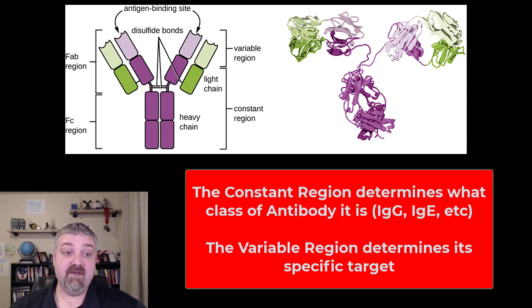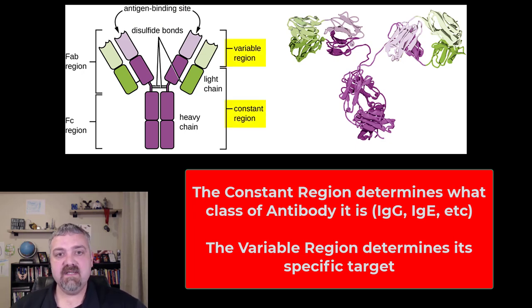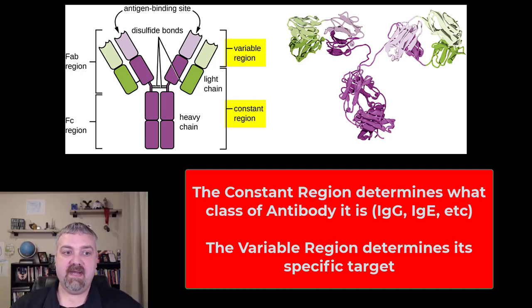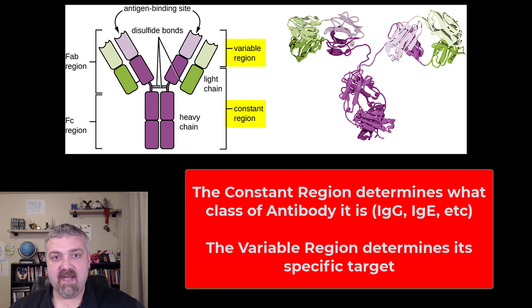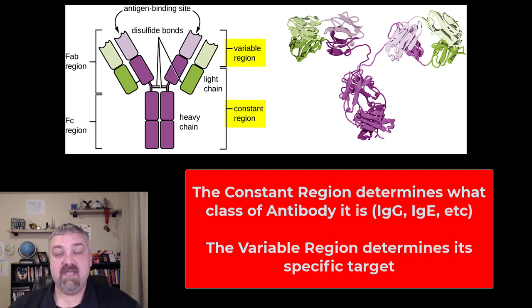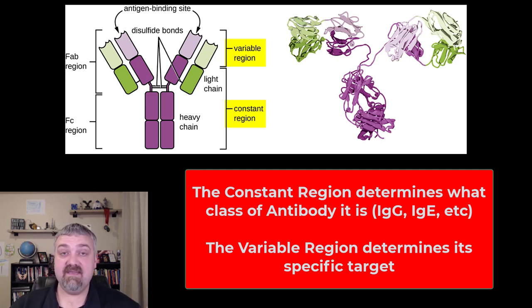Specifically what we're looking at here, you'll notice on the right hand side, at least in the middle, you have the constant region and the variable region. The constant region of an antibody determines what class of antibody it is — is it an IgG, an IgA, an IgM, an IgE, or an IgD? That's constant; the class of antibody is not going to change.